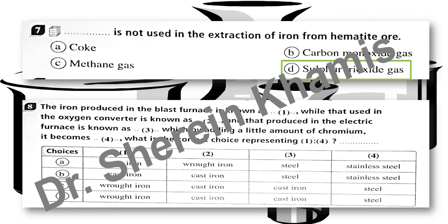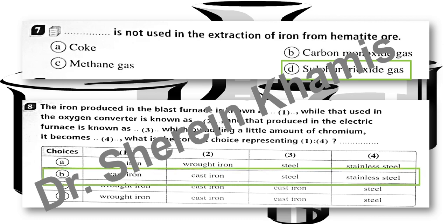Question number 8. The iron produced in the blast furnace is known as cast iron. That used in the oxygen converter is also known as cast iron. That produced in electric furnaces gives steel, and by adding a small amount of chromium it becomes stainless steel alloy. Answer B is correct.